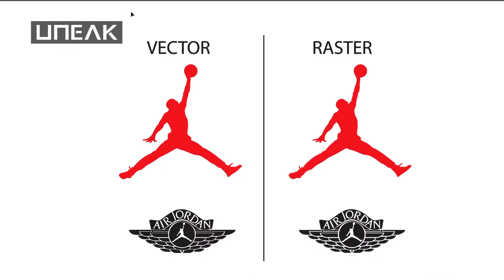Now, clothing logos. Here I have the Jordan logo — specifically the Jumpman logo. Up top is the Jumpman icon and the bottom is the old Jordan brand logo. This is what we call the icon — a silhouette of Michael Jordan doing a pose. This icon is simple yet complicated at the same time, but it's recognizable. The most important part of a logo is that you can make it recognizable in under a second — you see it and know what it is.